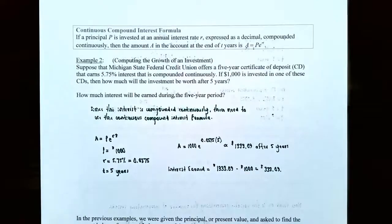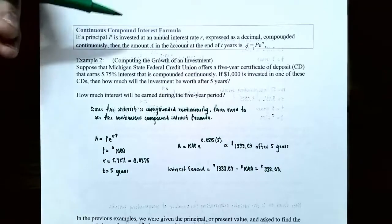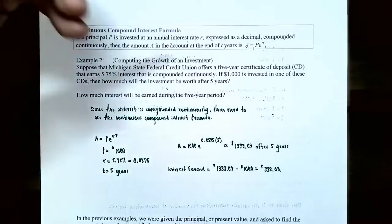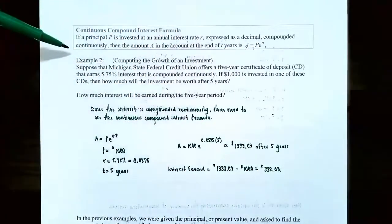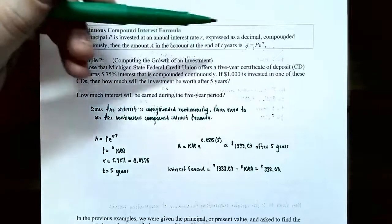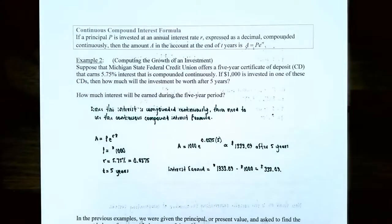To summarize: the continuous compound interest formula states that if a principal P is invested at an annual interest rate R expressed as a decimal and the interest is compounded continuously, then the amount A in the account after T years is given by A = Pe^(RT), sometimes written as PERT.